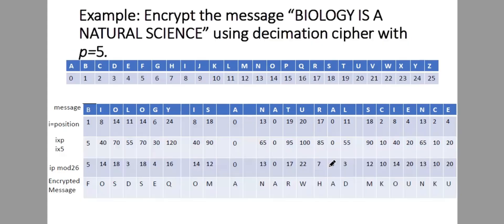To understand this further, let's encrypt the message 'Biology is a natural science' using the decimation cipher with P equals 5. We start with the message and write the original position of each letter. B is 1, I is 8, O is 14, L is 11, O is 14, G is 6, Y is 24, and so on. These are the original positions of the letters based on the table.